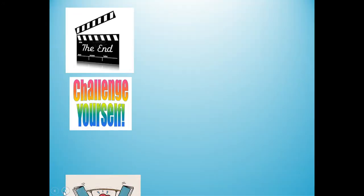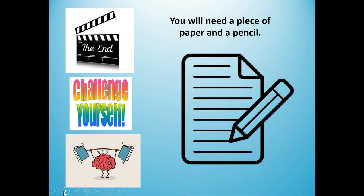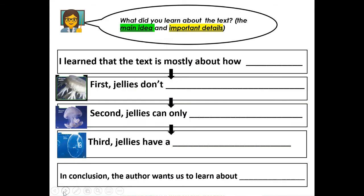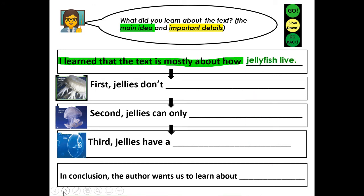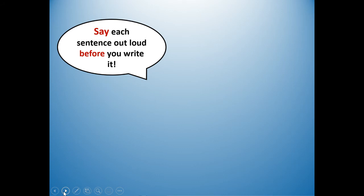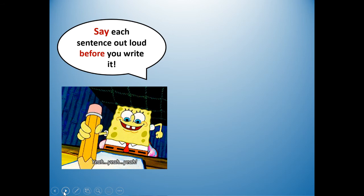Now it's the end of our review — it's time to challenge ourselves. You will need that piece of paper and pencil. Now it's time to answer the question: what did you learn about the text — the main idea and details? I'm going to give you your topic sentence: I learned the text is mostly about how jellyfish live. You do not need to write the topic sentence — you're going to focus on the three detail sentences: first, second, and third. Then I'm going to give you your conclusion: in conclusion, the author wants us to learn about jellyfish. Before you write each sentence, say it out loud first so you know what you're going to write before you write the first word.